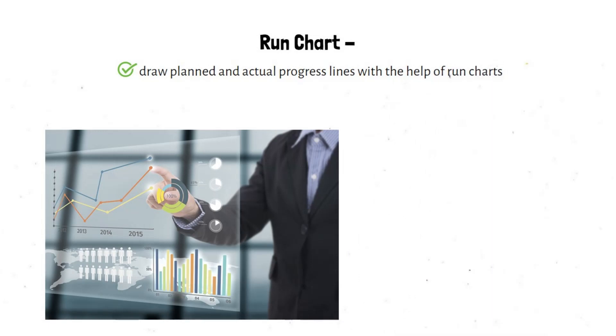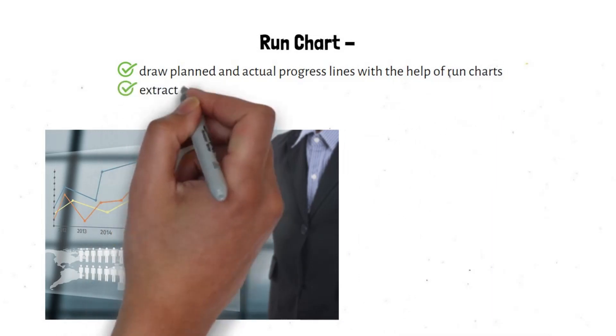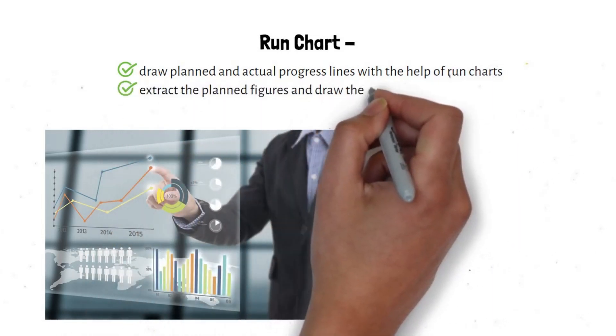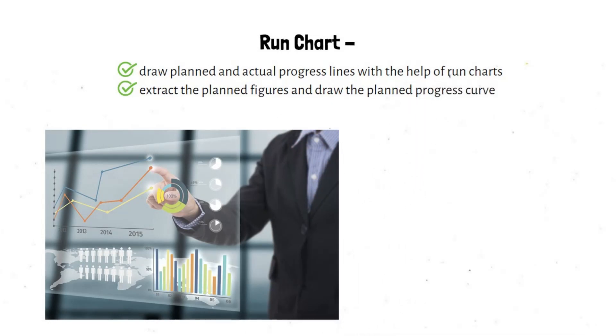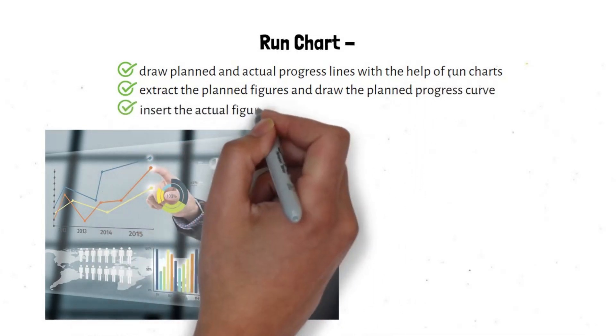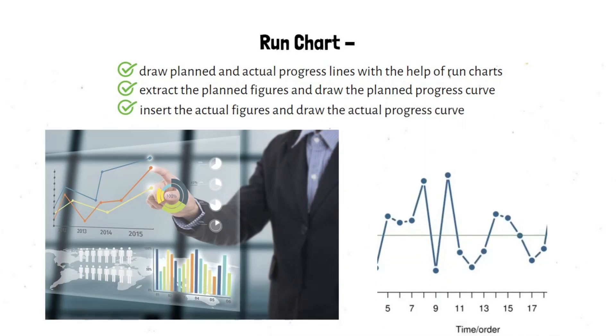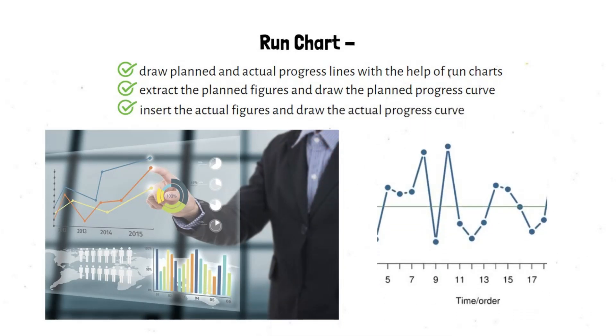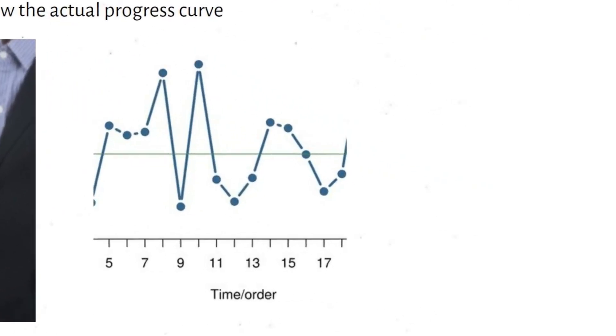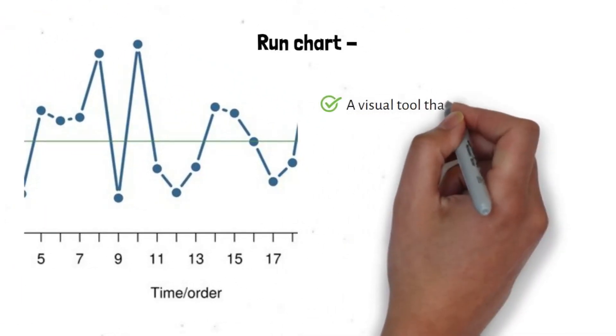For project performance measurement, you can draw planned and actual progress lines with the help of run charts. After creating the project schedule, you can extract the planned figures and draw the planned progress curve. As the project progresses, you can insert the actual figures and draw the actual progress curve. This is an example for the usage of run charts.